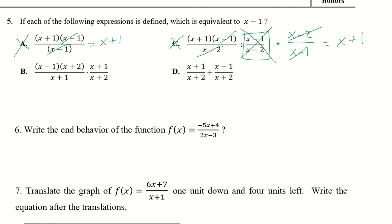Option b is already multiplication — no need to flip anything. The x plus 2 and x plus 1 cancel, leaving x minus 1. So b is the answer.